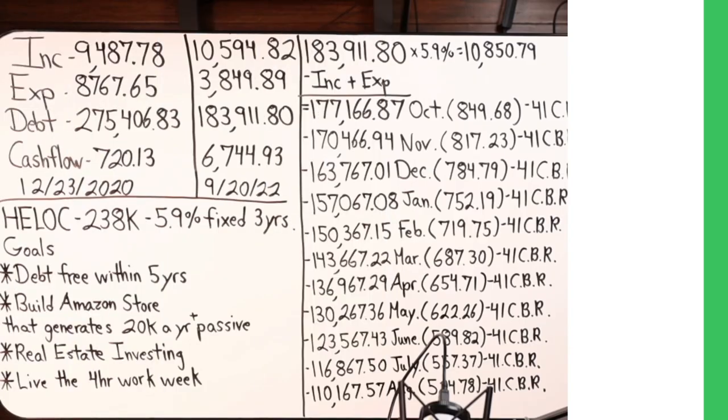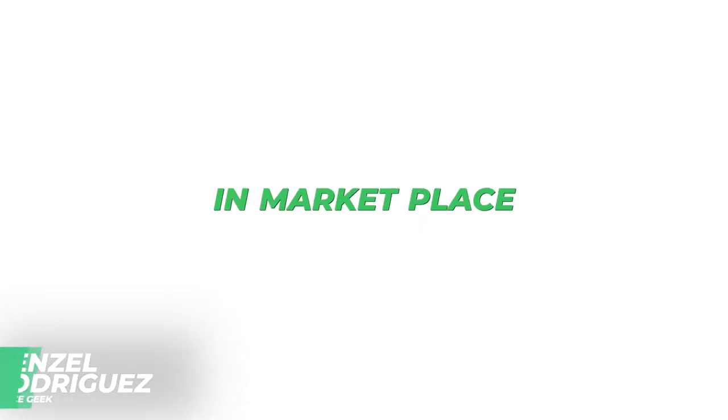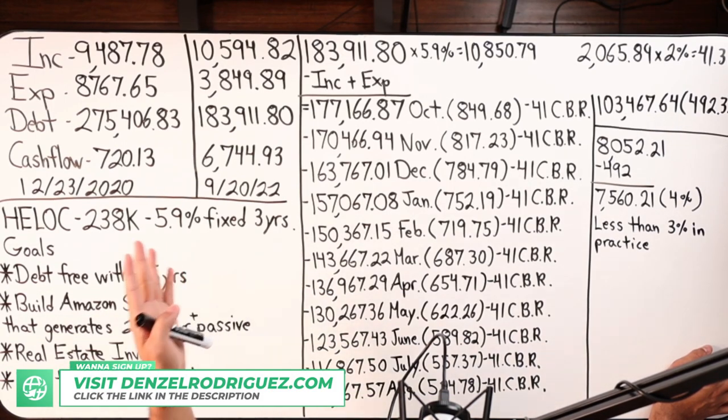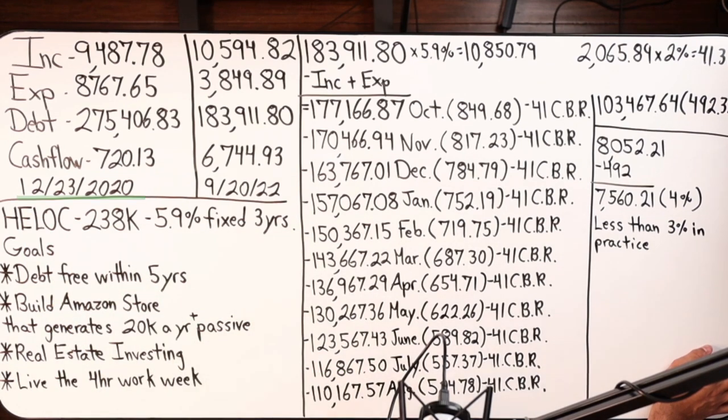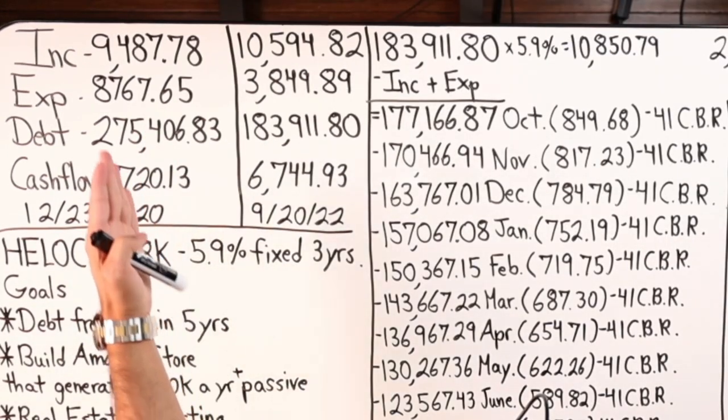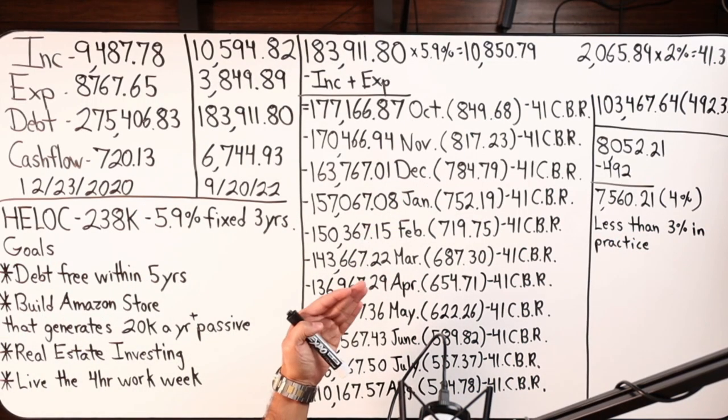Hello students, today we have a case study using first lien HELOC at First Savings Bank, arguably one of the best first lien HELOCs in the marketplace today. Here we have on the board a real life case study of a client that started working with me back in December 2020. Here were their four major numbers then: making $9,487.78 a month, expenses were high at $8,767.65, total debt a little over $275k, and their cash flow starting out was $720.